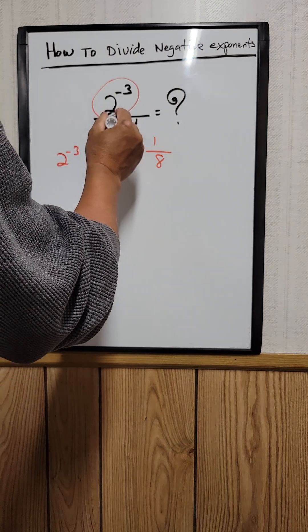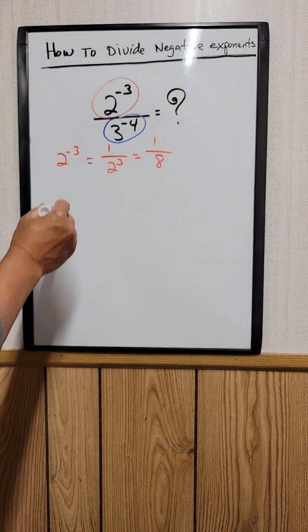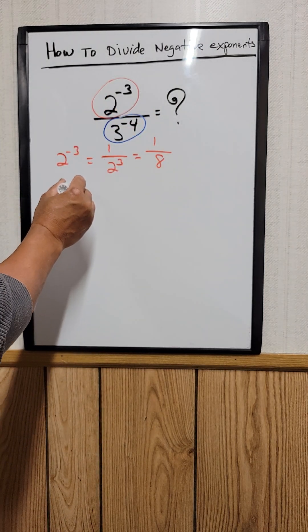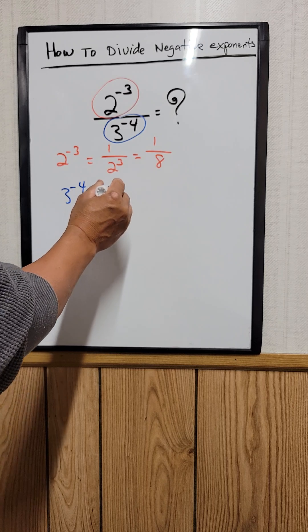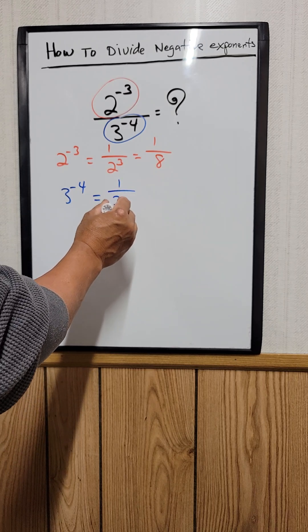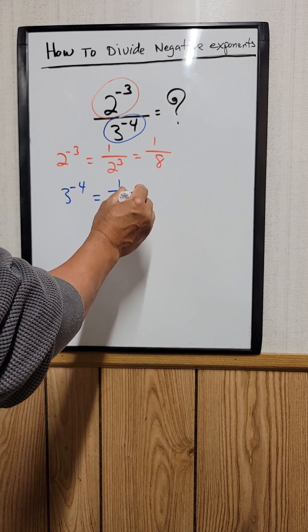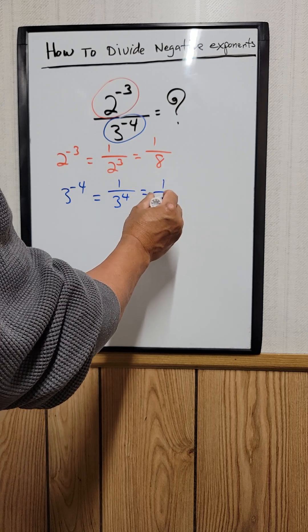How about this one? 3 to the negative 4th power is the same thing as saying 1 over 3 to the 4th power, which equals 1 over 81.